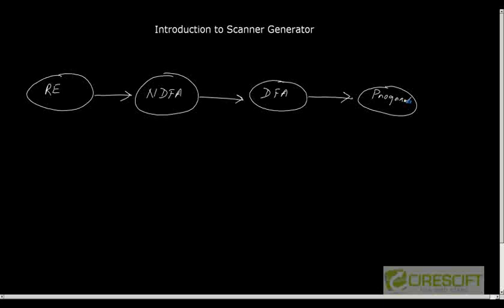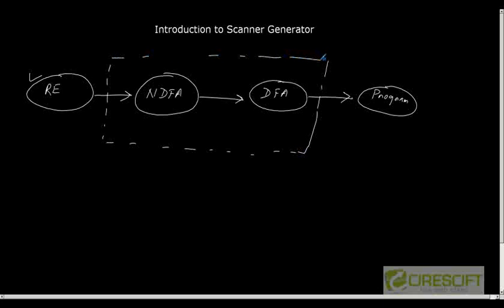In the compiler design industry, what designers generally prefer is to just write the regular expressions for the possible valid tokens of a language, then use one tool that performs the steps of creating NDFA, converting the NDFA to DFA, and then converting the DFA to output — a source program in a high-level language like C, C++, or Java. Those tools are called scanner generators.